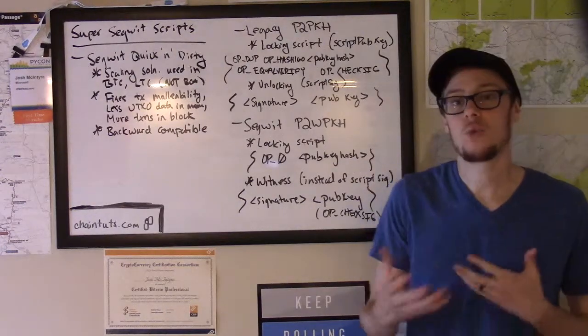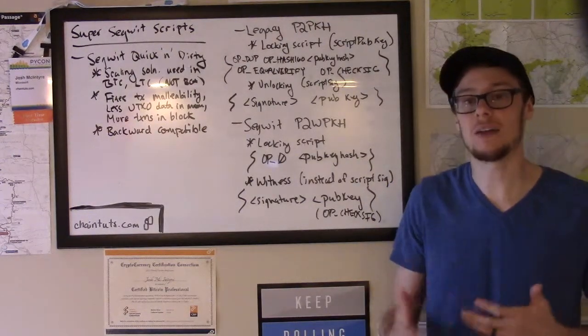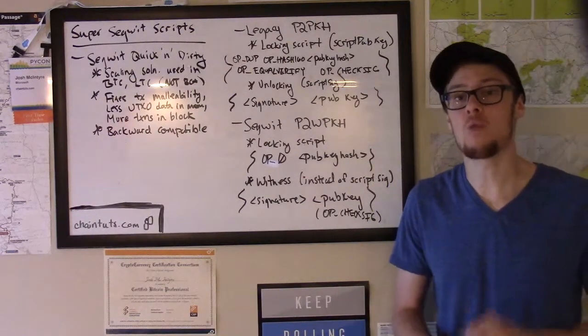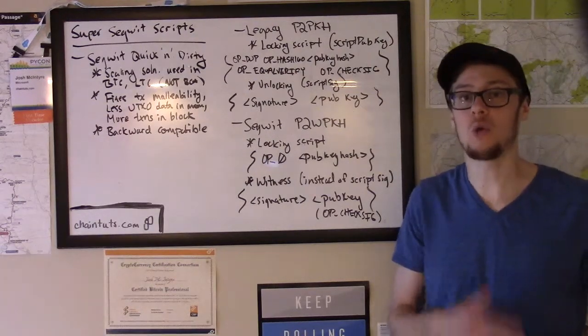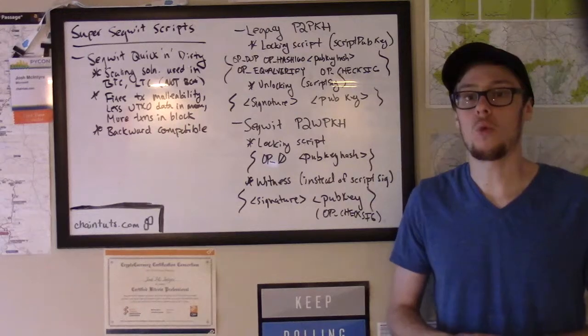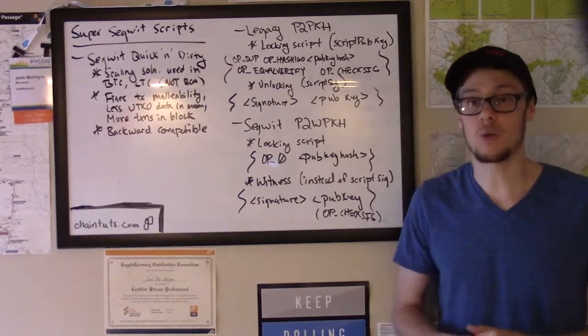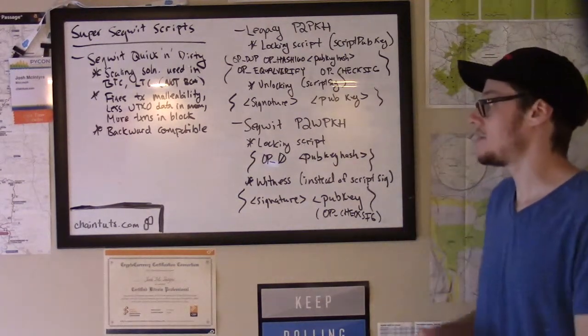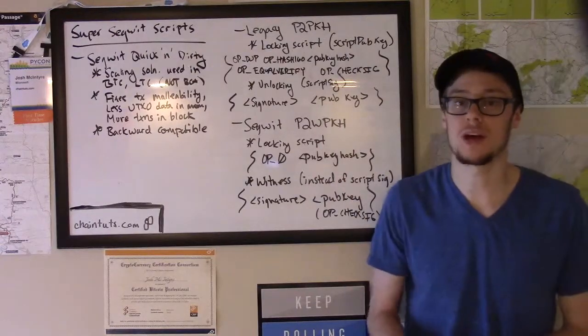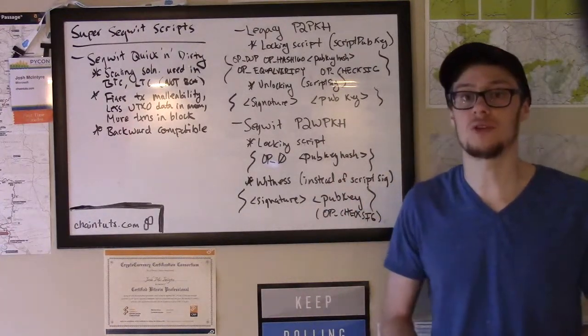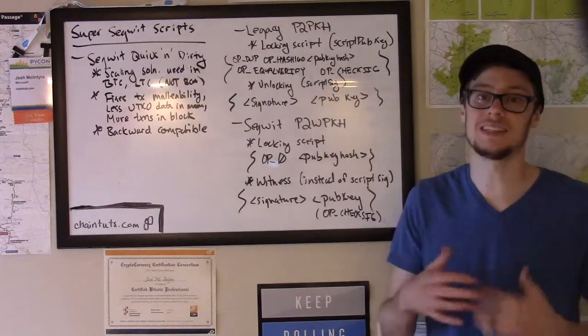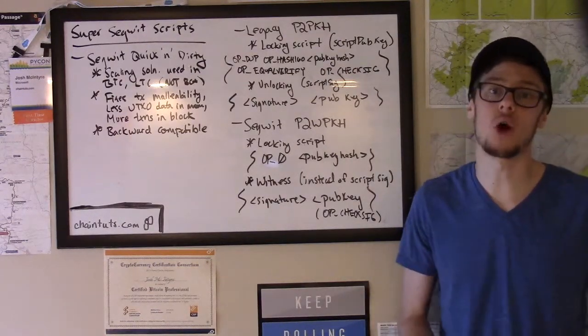How this works in terms of scaling is that instead of having a one megabyte hard block size limit, there's now something called weight units. Nodes that are running the SegWit rules see the size of SegWit transactions a little differently, where this witness data, since it's moved to a different data structure, counts as less towards the size of the overall transaction.